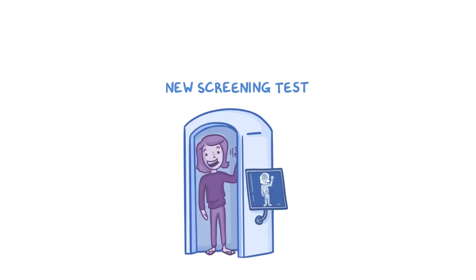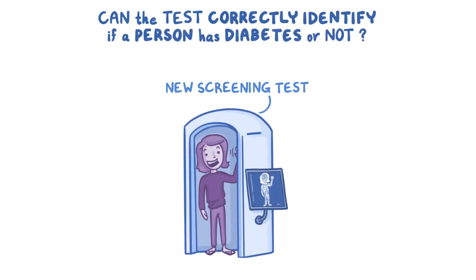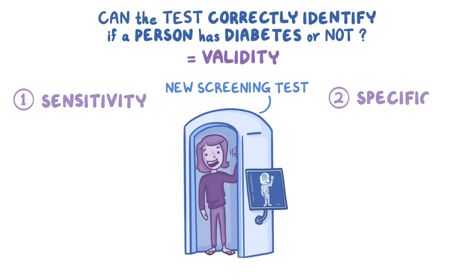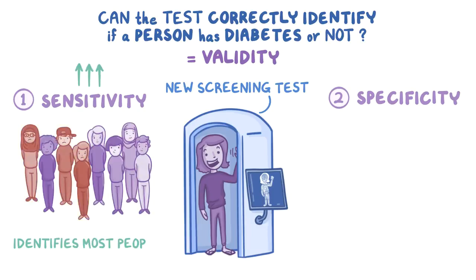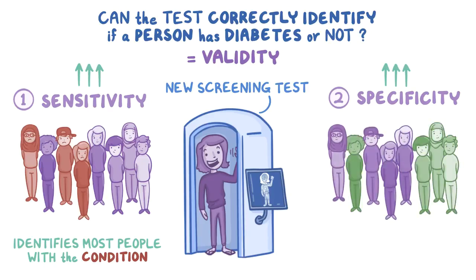Let's say a new screening test is developed to figure out if people have diabetes before they start showing symptoms. Before using the test, we have to make sure that the test works — in other words, can the test correctly identify if a person has diabetes or not? This is the test's validity, and it has two components: sensitivity and specificity. A test with high sensitivity will correctly identify most people who have the condition, and a test with high specificity will correctly identify most people who don't have the disease.